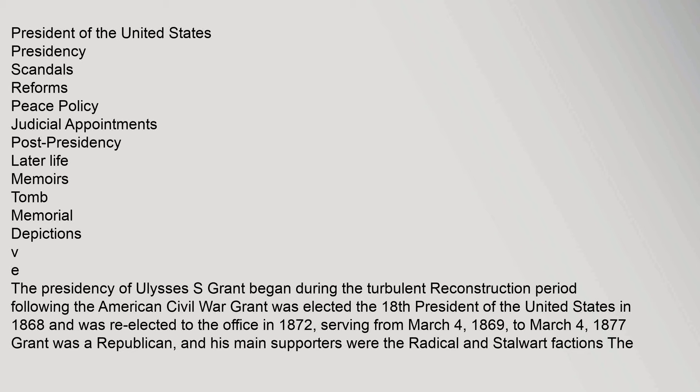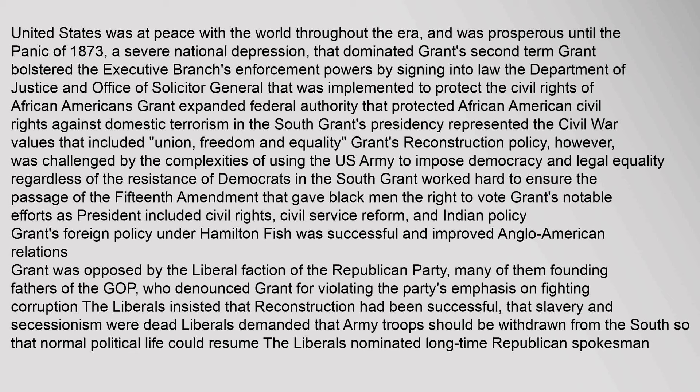The presidency of Ulysses S. Grant began during the turbulent Reconstruction period following the American Civil War. Grant was elected the 18th President of the United States in 1868 and was re-elected in 1872, serving from March 4, 1869, to March 4, 1877. Grant was a Republican, and his main supporters were the radical and stalwart factions. The United States was at peace with the world throughout the era, and was prosperous until the Panic of 1873, a severe national depression that dominated Grant's second term.